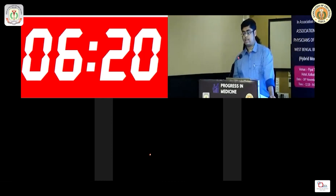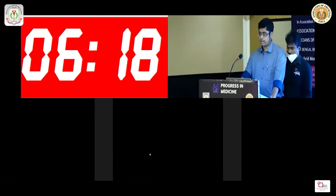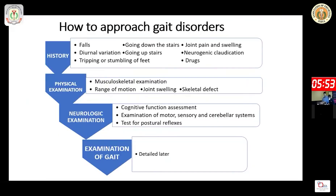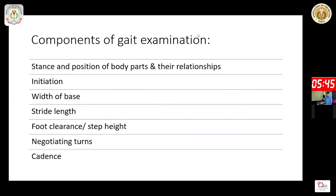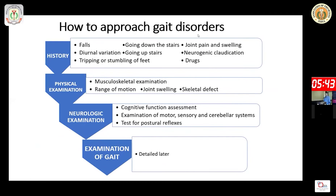We will discuss normal pressure hydrocephalus and the effect of the frontal lobe on gait. In taking the history, we should cover: history of falls, going downstairs and upstairs (which indicates the function of quadriceps and hip extensors), joint pain and swelling, diurnal variation — we all know about the dopa-responsive dystonia — tripping or stumbling of feet, and neurogenic claudication.